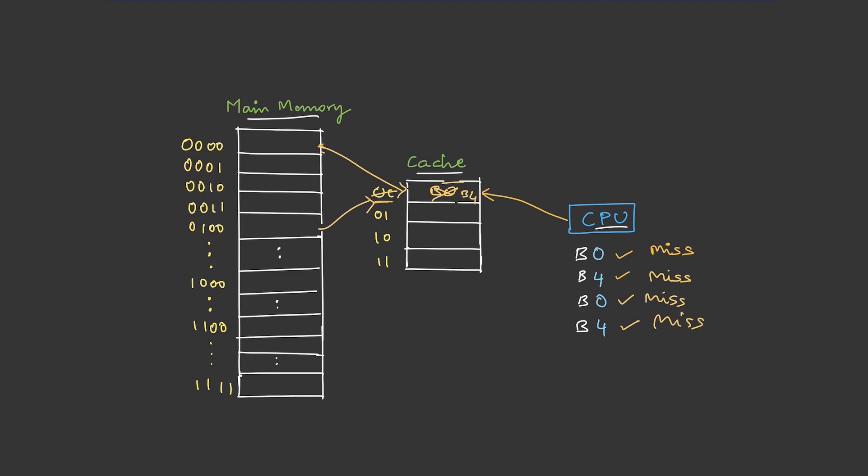If you observe carefully, we had four requests, and because of the predefined placement, these two can be placed only in this particular line. Even though the other slots are free, we cannot use them. So this restriction on the placement is actually a disadvantage in direct mapping.